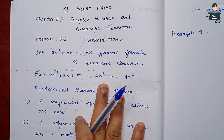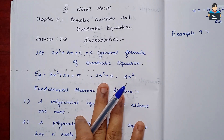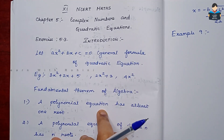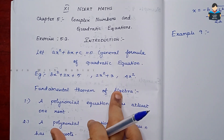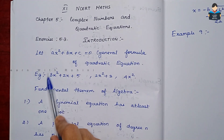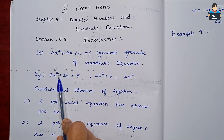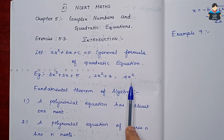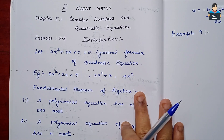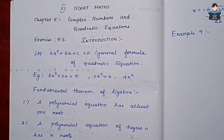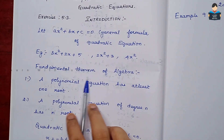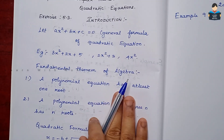So how do we identify a quadratic equation? In a given equation, if the highest degree is 2, then it is a quadratic equation. Next, we will look at the fundamental theorem of algebra.